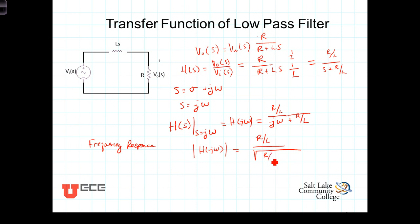divided by the magnitude of the denominator, which is the square root of the real part squared, R over L quantity squared, plus the imaginary part squared, omega squared.